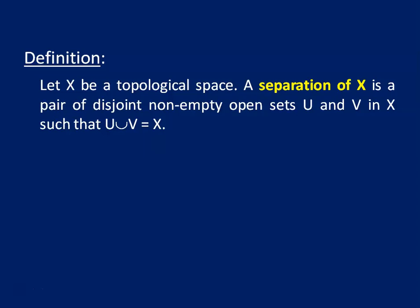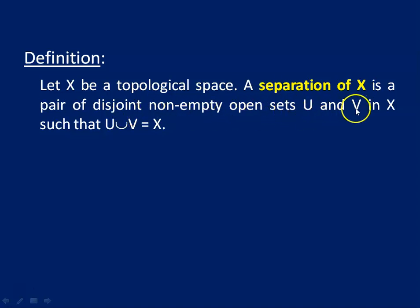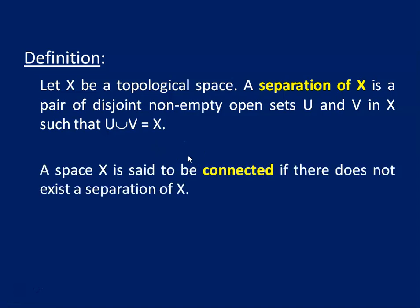Let us recall the definition of connected spaces. Let X be a topological space. A separation of X is a pair of disjoint, non-empty open sets U and V in X such that U union V equals the whole space. If there does not exist any separation on a space, then the space is said to be connected.